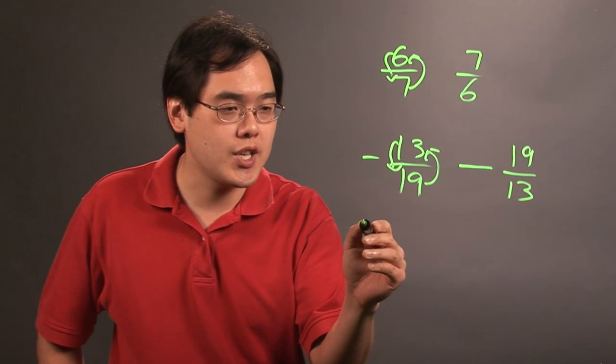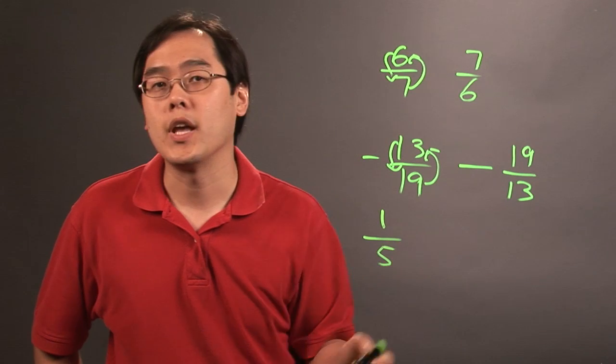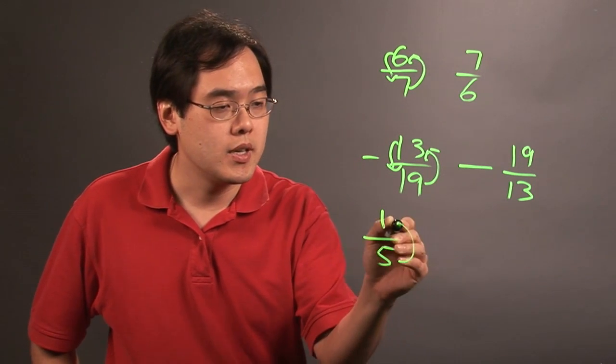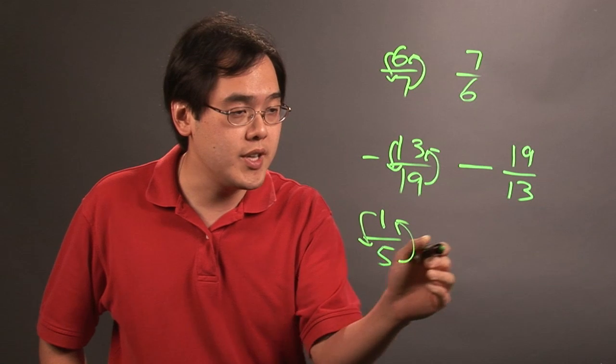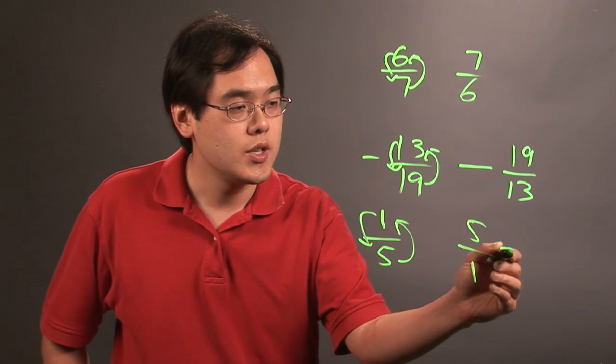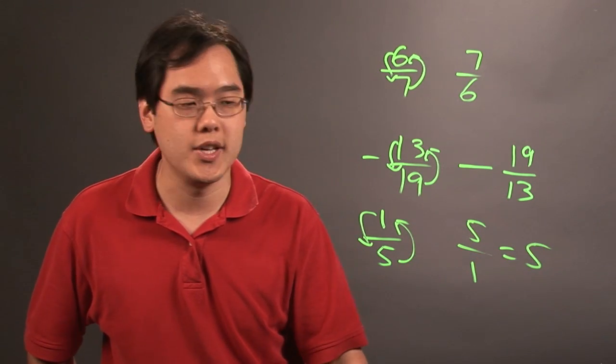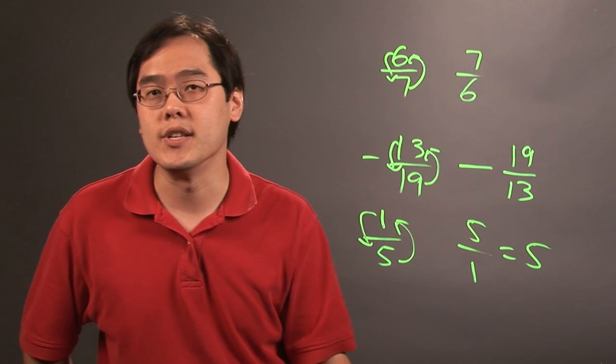Now if you have, let's say, 1 over 5, and you want to reciprocate that, same kind of idea. You want to be consistent as to what you do, but in this case, you have 5 over 1. So that doesn't have to be written as a fraction if you don't want it to be. So the reciprocal of 1 over 5 is 5.